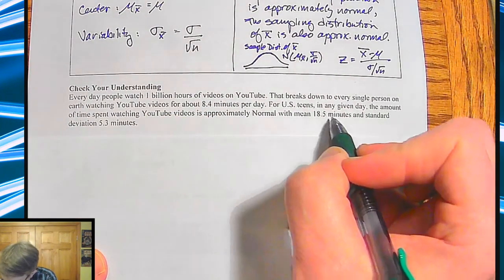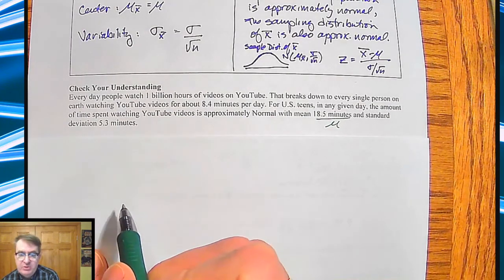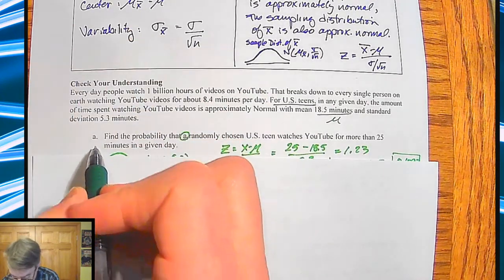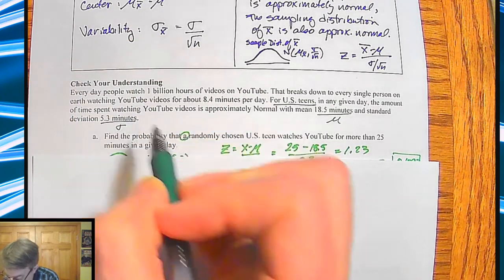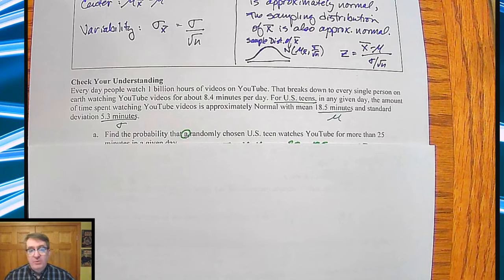So a couple of things here before you guys get started. These are the important things. So this up here is going to be your mu, because we're talking about the population, because it says for U.S. teens. That's a population there. And then down over here, this 5.3 minutes, that is going to be your sigma. So hit pause, take a second, run through the problem, come on back, and we'll see how you did.